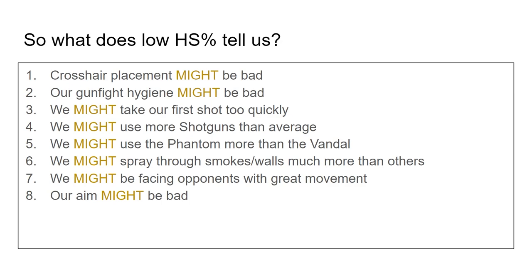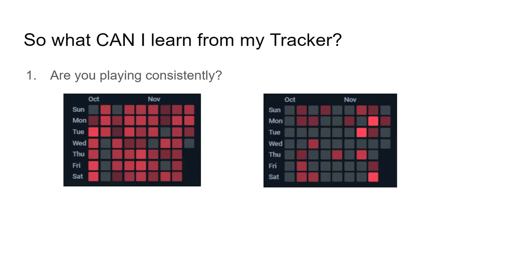How do we work with that? We need to VOD review. The only way to effectively review your stats is to pair it with VOD review and look for the factors that might be causing our low headshot percentage. Without a VOD to go along with it, we can't definitively state why the headshot percentage is low. It could be totally fine that our headshot percentage is low, or it could be a terrible thing — maybe it's our crosshair placement. So what can we get from just looking at our tracker, though? Maybe you don't have a VOD and you don't want to do VOD review.